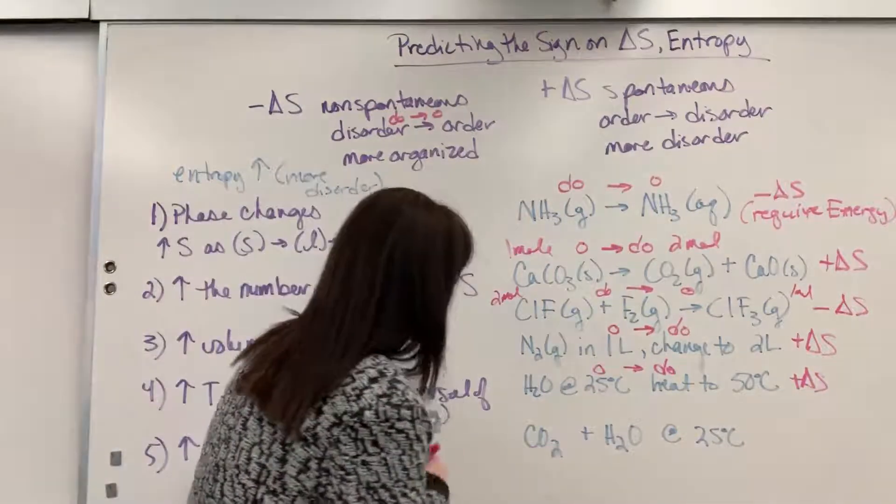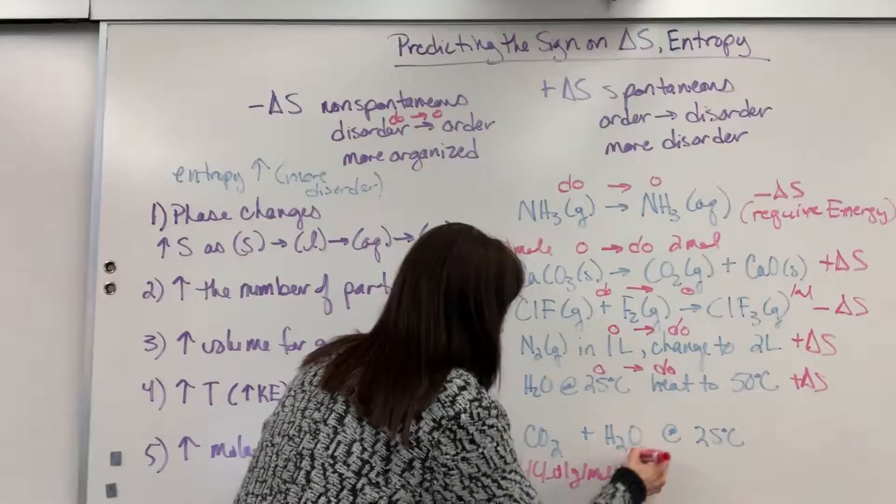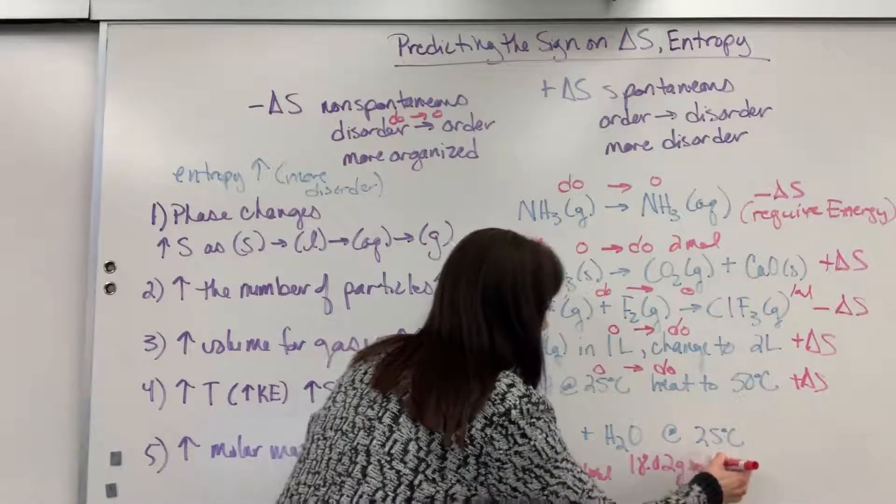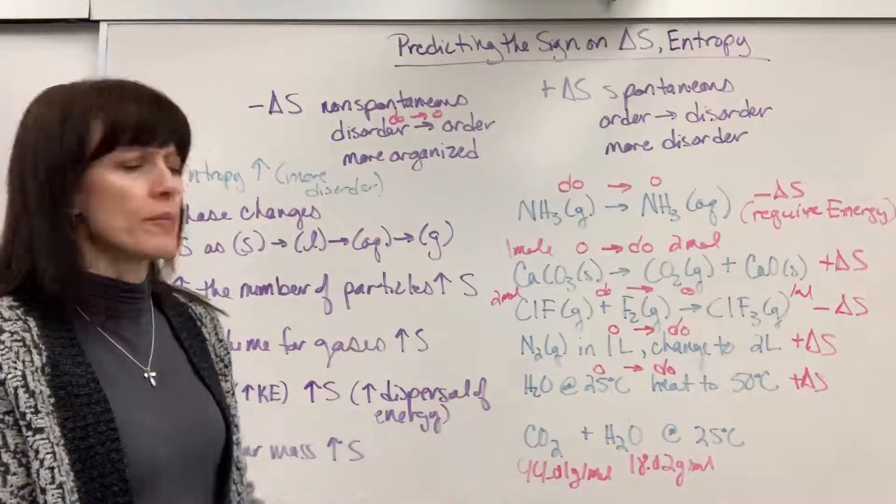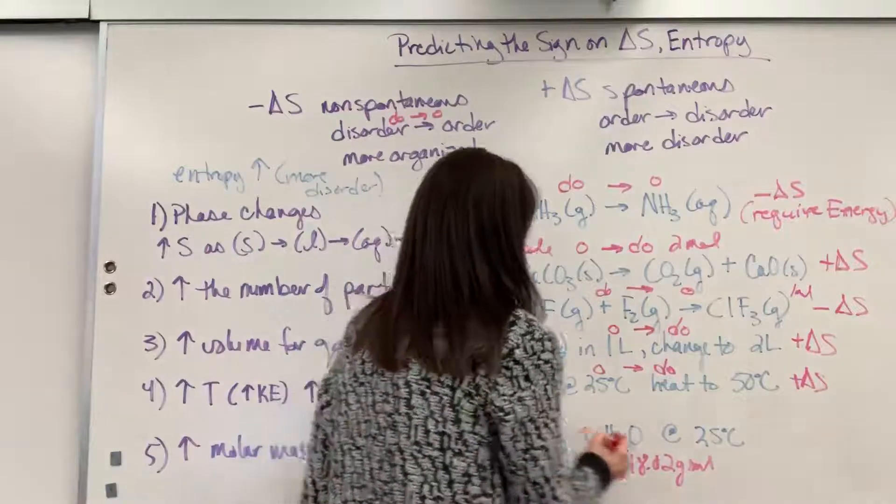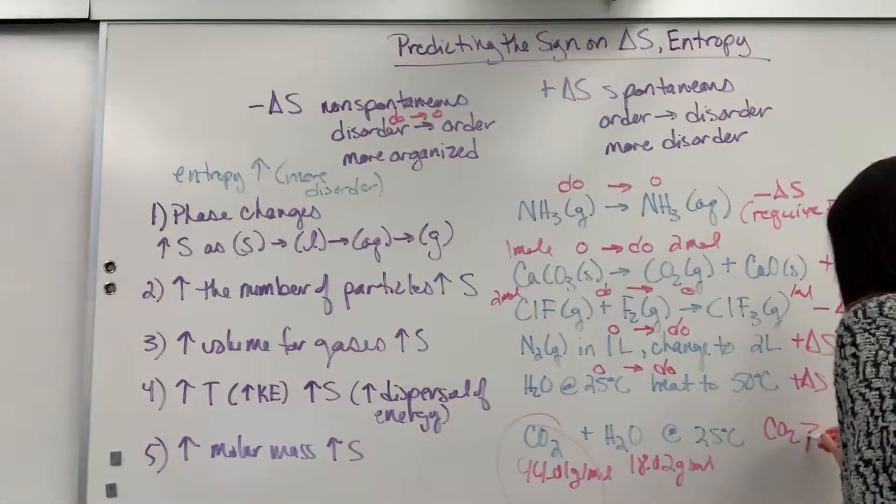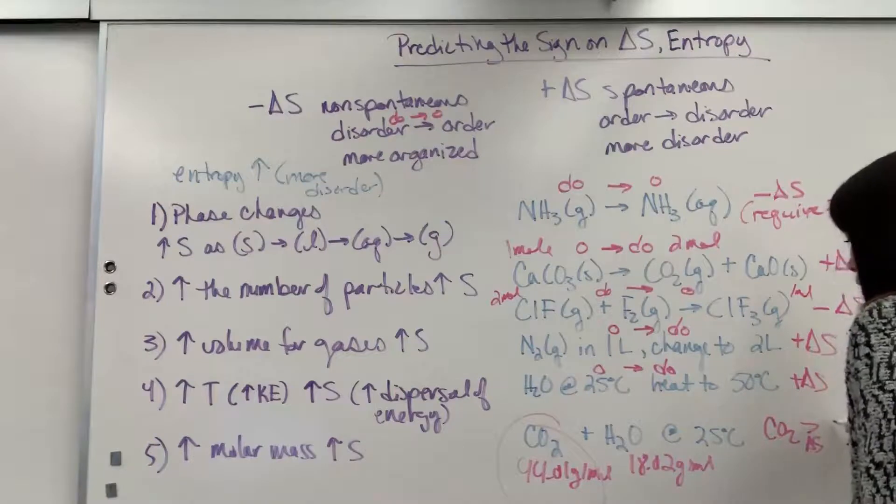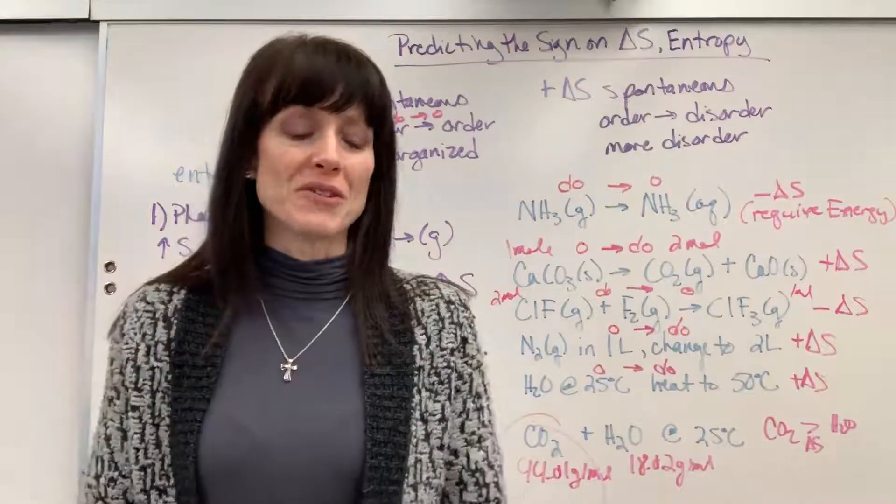So if we take carbon dioxide, which is going to be 44.01 grams per mole, and water is 18.02 grams per mole. Notice they're at the same temperature. I want you to know which compound inherently is going to have more disorder. It's the larger one. So I would say that the CO2 has greater entropy, the delta S, than the H2O. There's greater disorder for the larger molar mass.